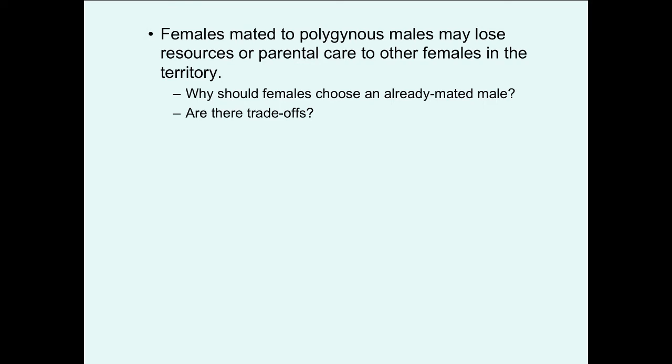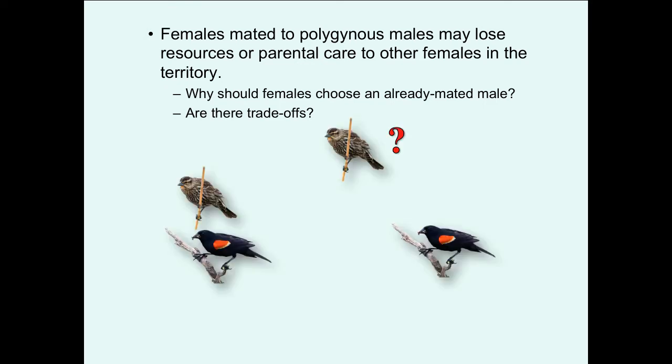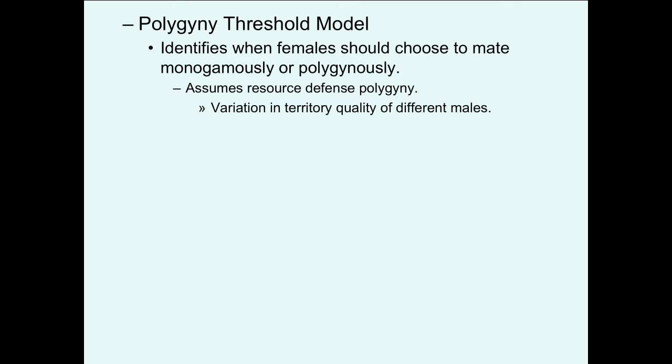This begs the question: why should females choose an already mated male when they might be able to mate monogamously? If one male has multiple females, there are likely unmated males available. Are there trade-offs to choosing monogamous versus polygynous matings? In red-winged blackbirds, early females mate with males of their choice, but later females must decide whether to mate with a male that already has females on his territory or mate monogamously on a lower-quality territory. This led to the polygyny threshold model.